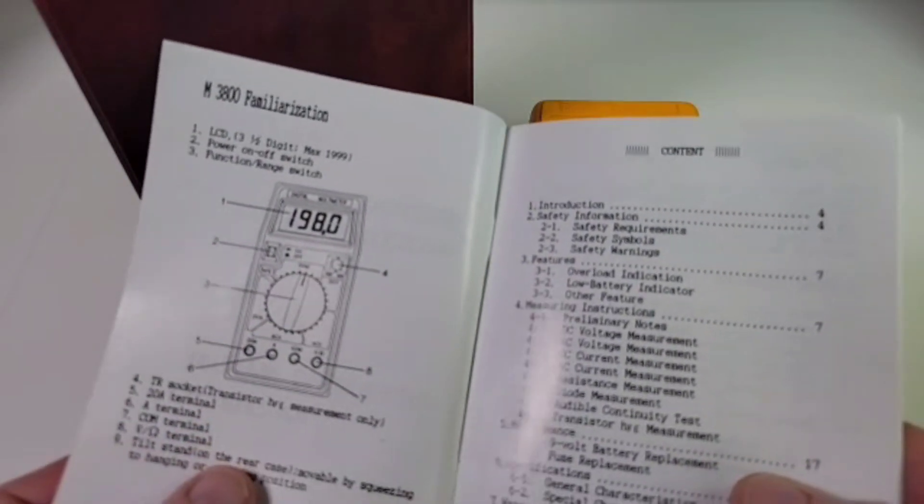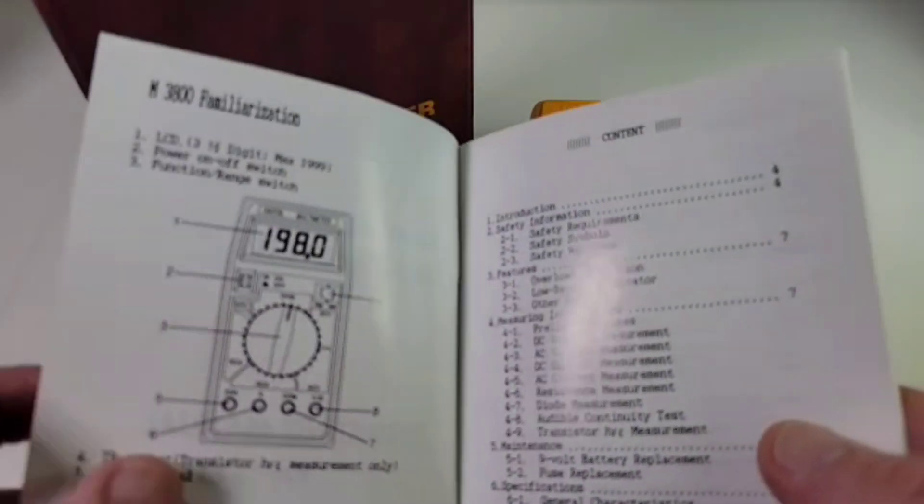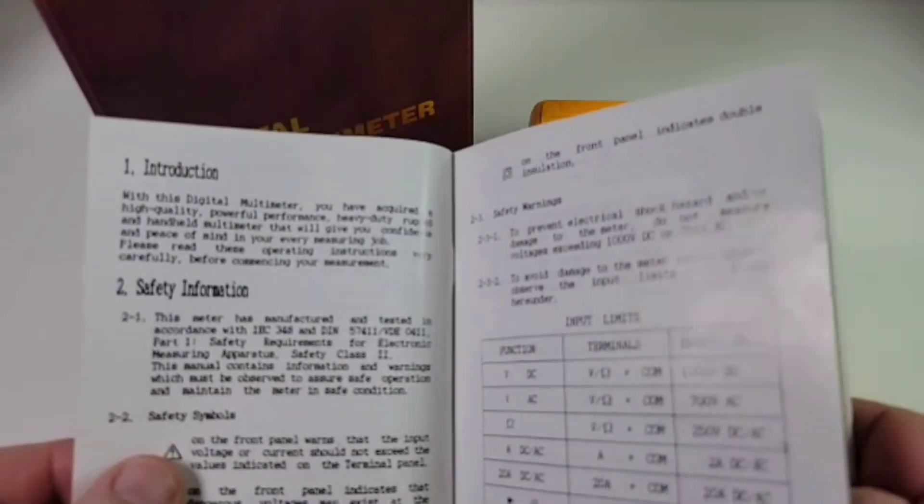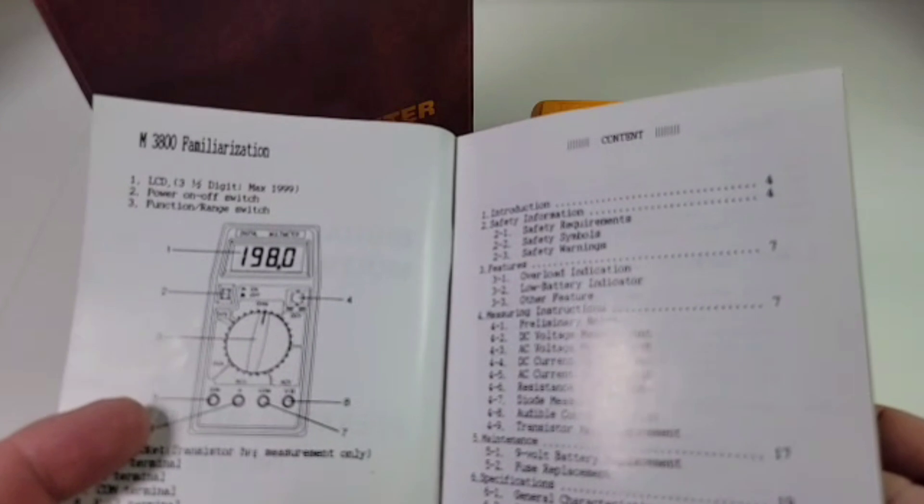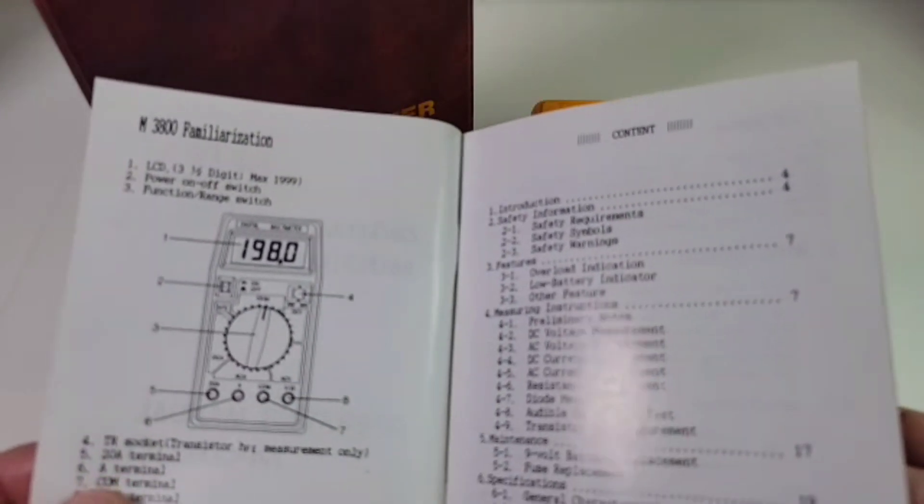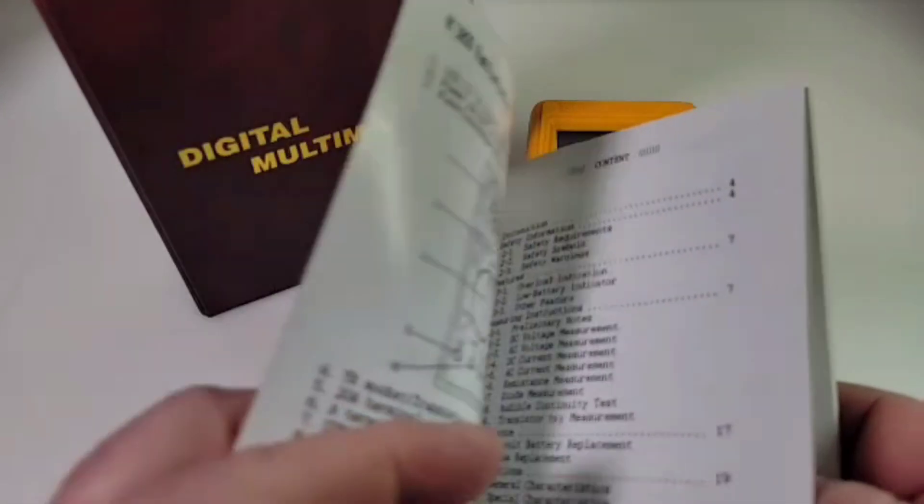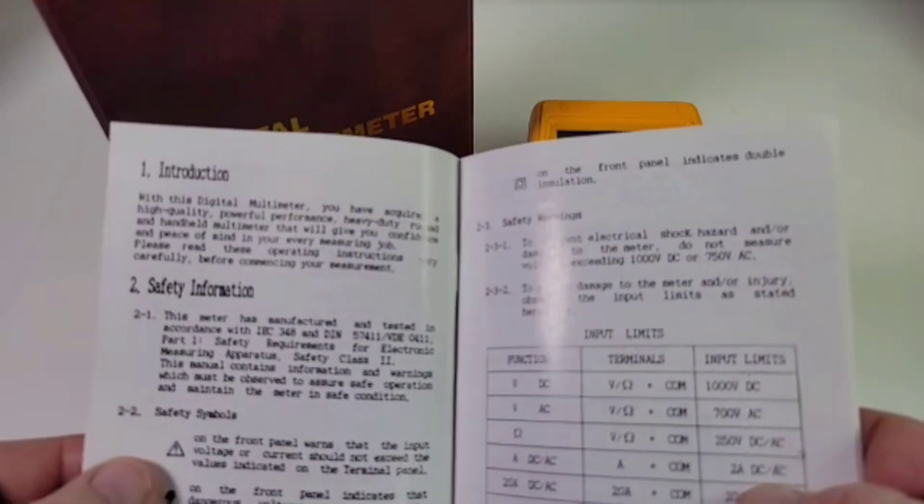And look at that, this is pushing 30 years now. RadioMuseum.org has some old multimeters listed, and they had this down as a 1984, circa 1984, but I think that's incorrect. I do believe this multimeter came out around 1994.